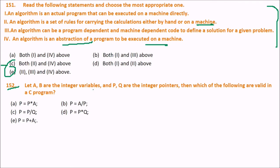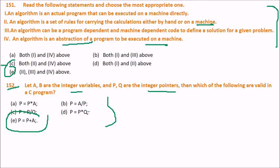Let a be integer variables and p, q be integer pointers. Which of the following is valid in a C program? The answer is E: p = p + a. According to integer arithmetic rules for pointers, operations like p = p * a, p = a / p, p = p / q, and p = p * q are all invalid. Only p = p + a is valid.